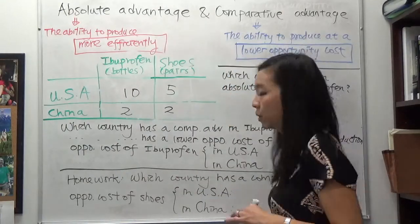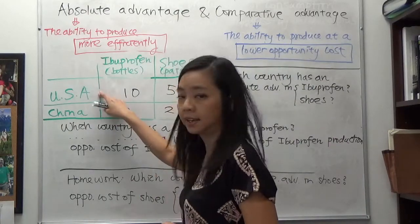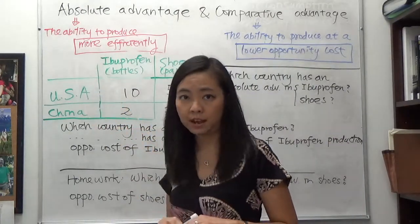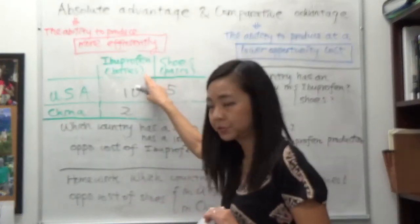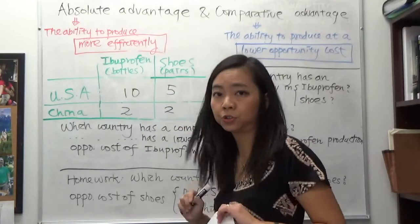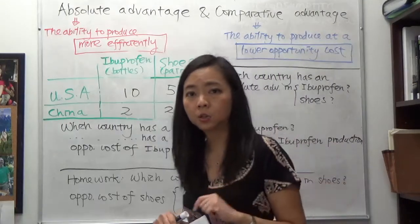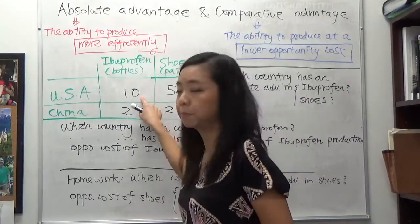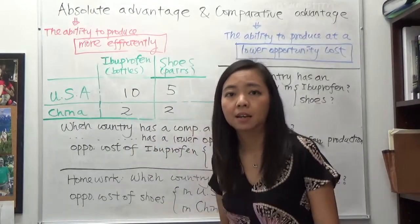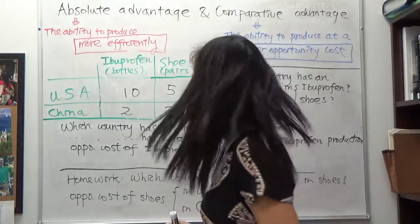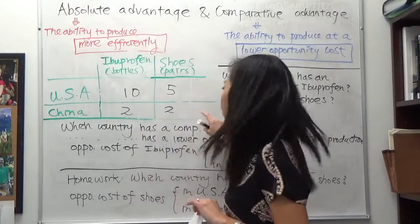We're going to start with an example. We have two countries, the USA and China, and we have only two goods: ibuprofen — a kind of painkiller measured in bottles — and shoes. In one labor hour, the US can produce either 10 bottles of ibuprofen or five pairs of shoes. In the same labor hour, China can produce either two bottles of ibuprofen or two pairs of shoes.